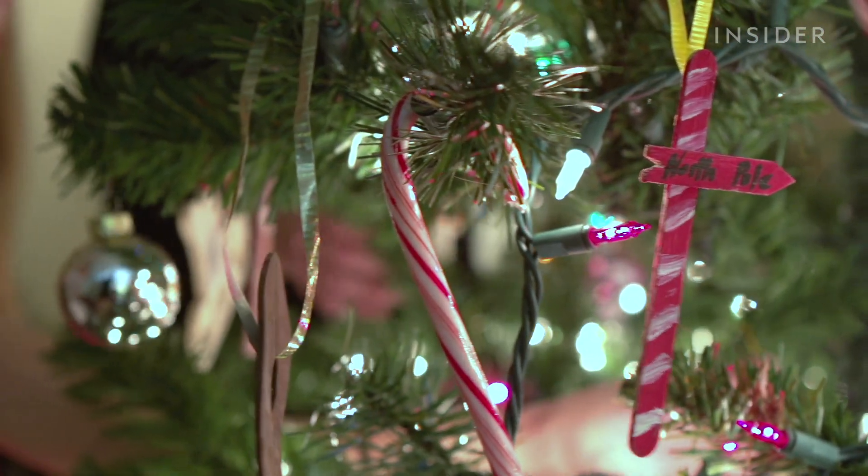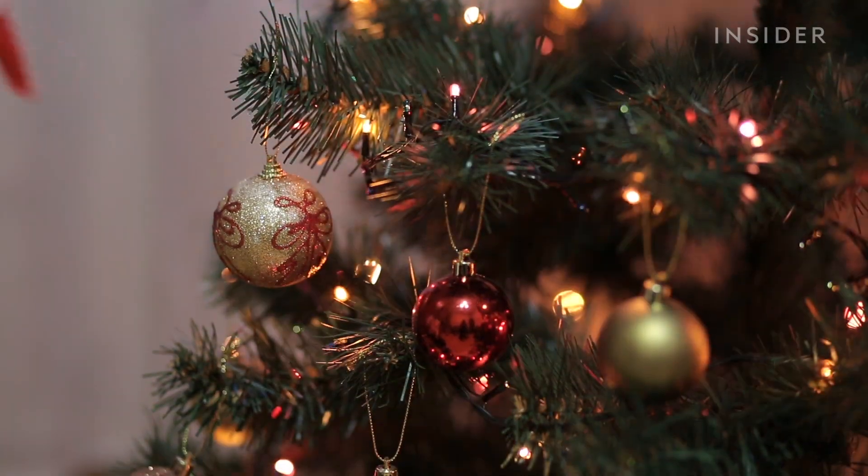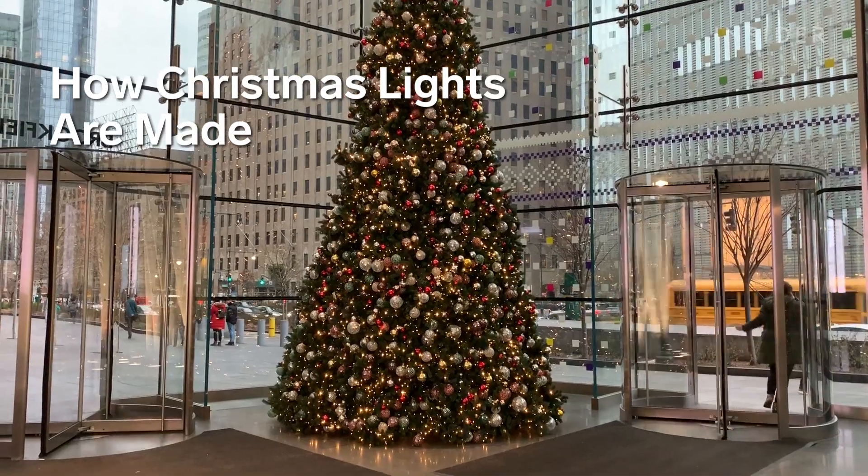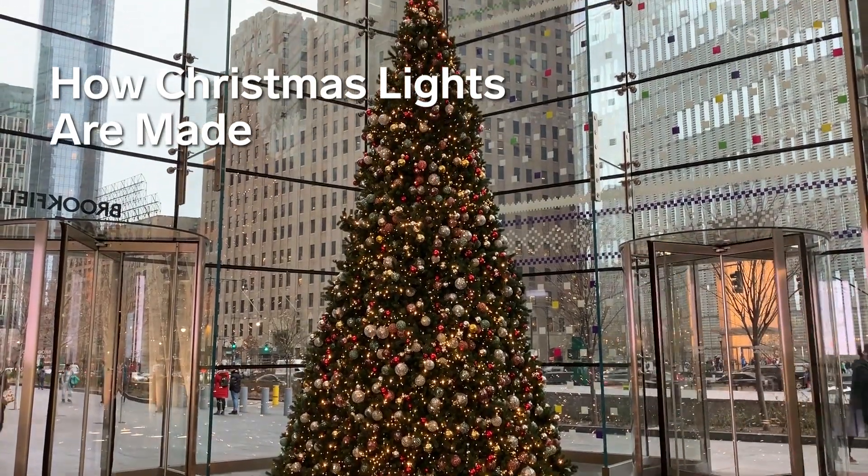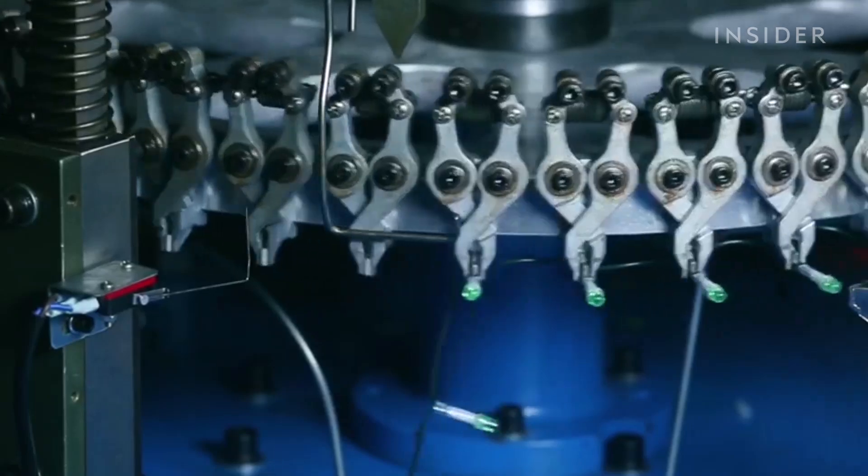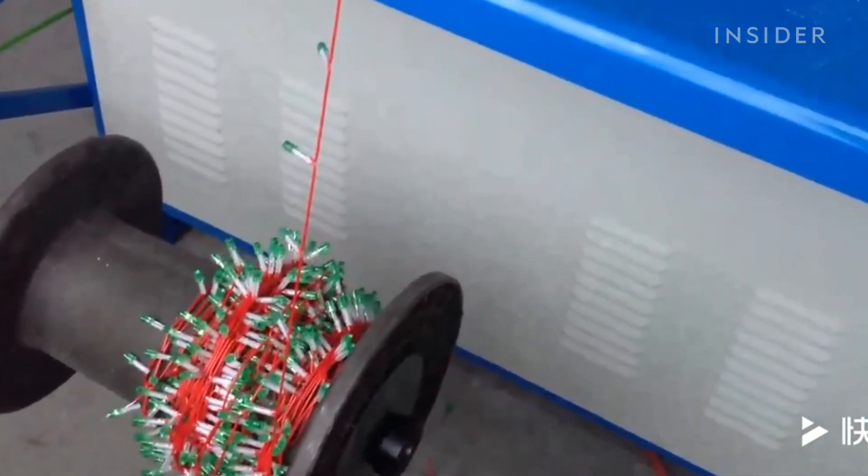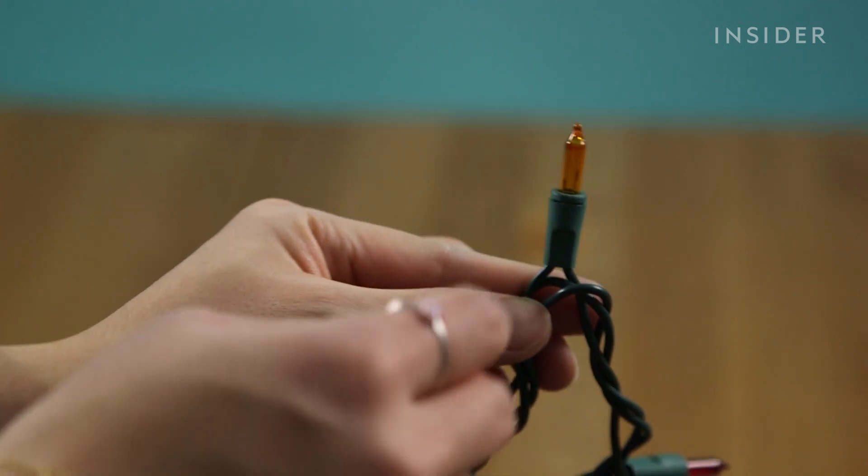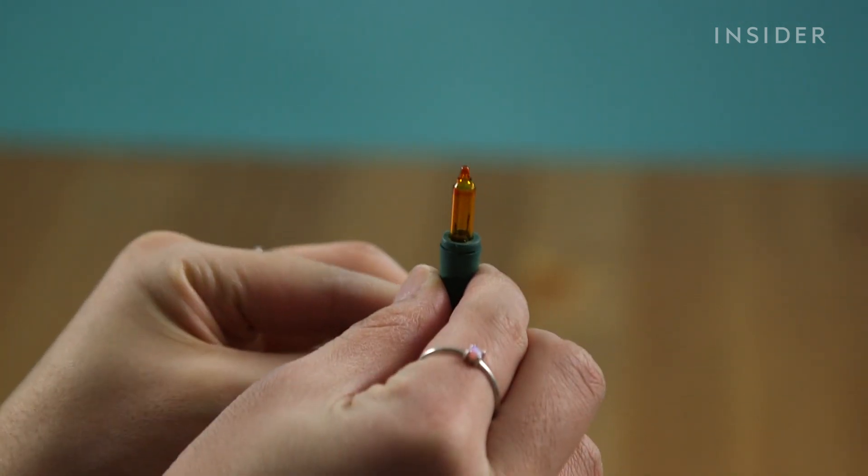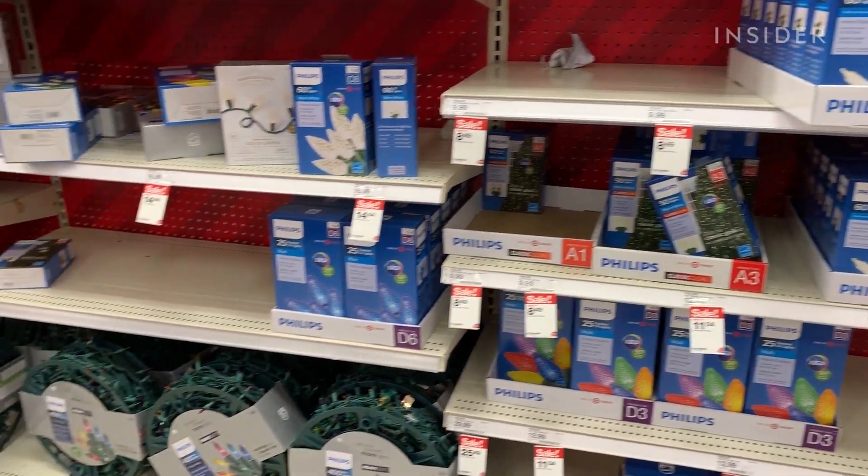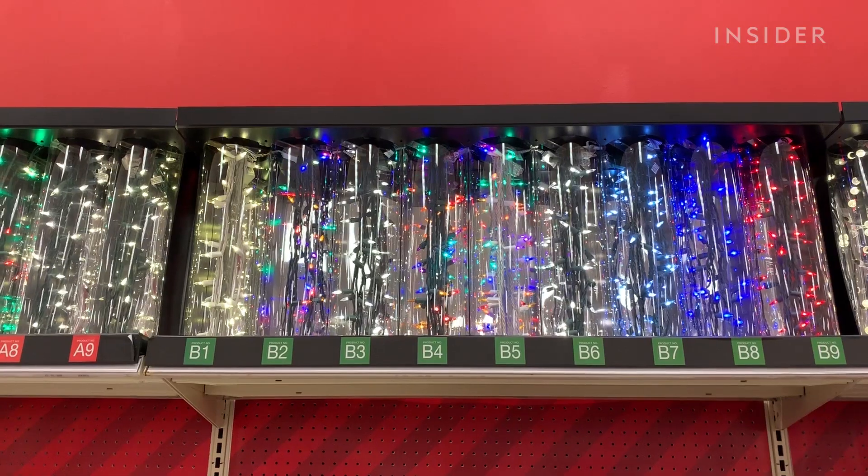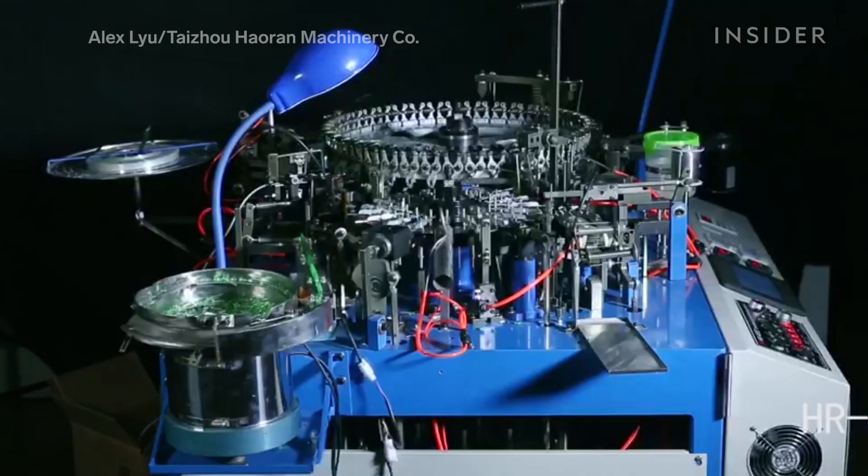Have you ever wondered how these bands of lights come together? It's a simple string of miniature light bulbs with some wiring inside that connects everything together. Holiday light companies use various methods to make their string lights.